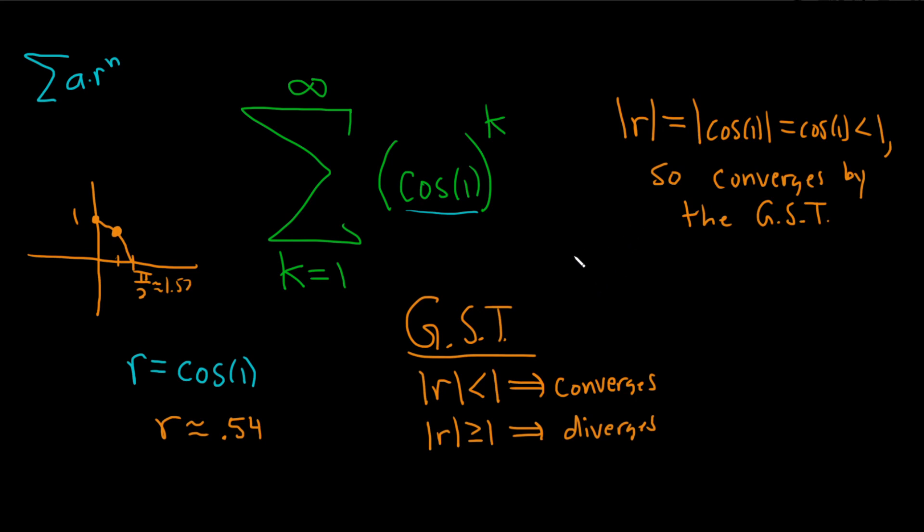So that answers the convergence question. Because it converges, now we can find the sum. To find the sum, it's actually very easy. You take this number and plug it into your k. We'll get cosine of 1 to the first power, and that goes up top. Always. On the bottom, it's just 1 minus r. So 1 minus cosine 1.